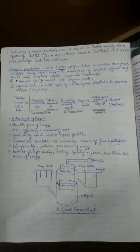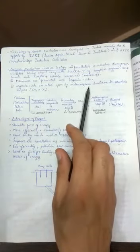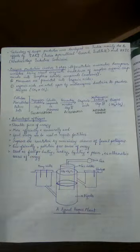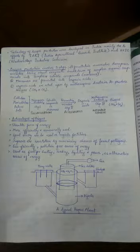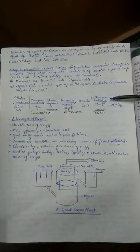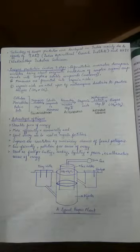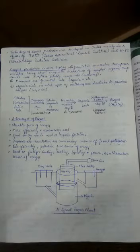Once organic acids are formed, the next step is that these acids are acted upon by methanogenic bacteria to produce biogas, which is a mixture of methane and carbon dioxide with some hydrogen and H2S. This third step is called methanogenesis, and finally biogas is produced.